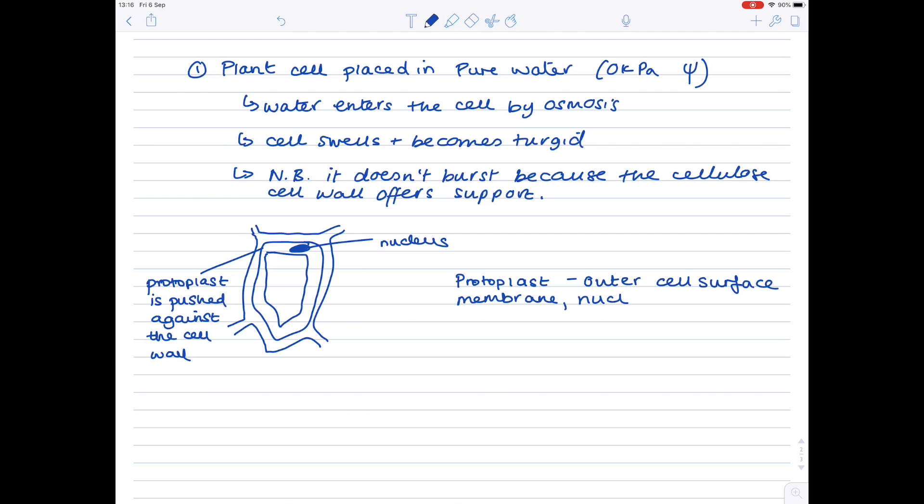What is the protoplast? Well, it's just the name given for the outer cell surface membrane, the nucleus, the cytoplasm, and the inner vacuole membrane.